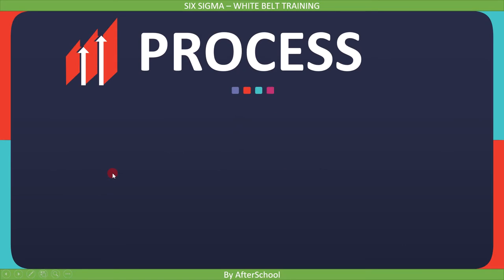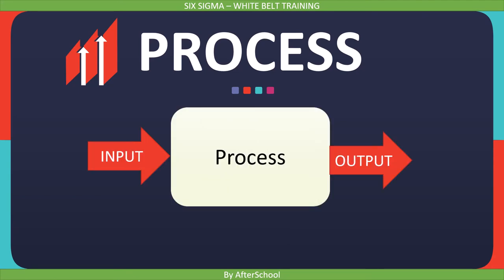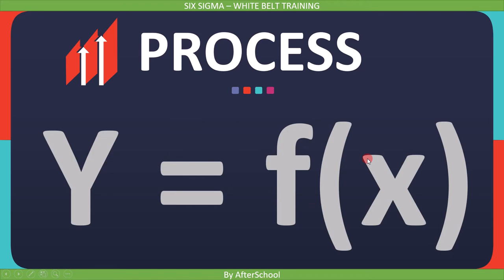The second philosophy is process. Each process has certain inputs and outputs. In Six Sigma, we look at improving the output by changing the input, because if you don't change your input, your output will not change. Here, y is the output and x is the input. This equation means output y is a function of input x. We can clearly see that the output of the process clearly depends on the input, so in order to get improved output, we have to change the input. This is all about process.